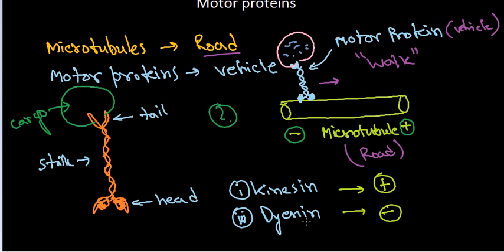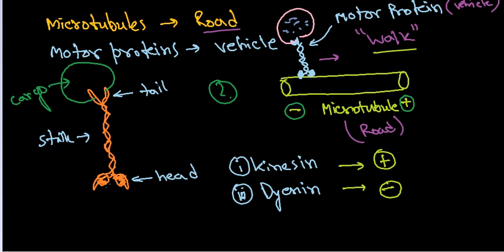Both kinesin and dynein can carry cargo molecules. Sometimes organelles like mitochondria are attached instead of cargo vesicles, since organelles also need to be moved from one place to another. The process of movement involves the motor protein forwarding one head and crossing over the other — this is the first power stroke. Then the second part crosses over, which is the second power stroke. That is how they actually move.